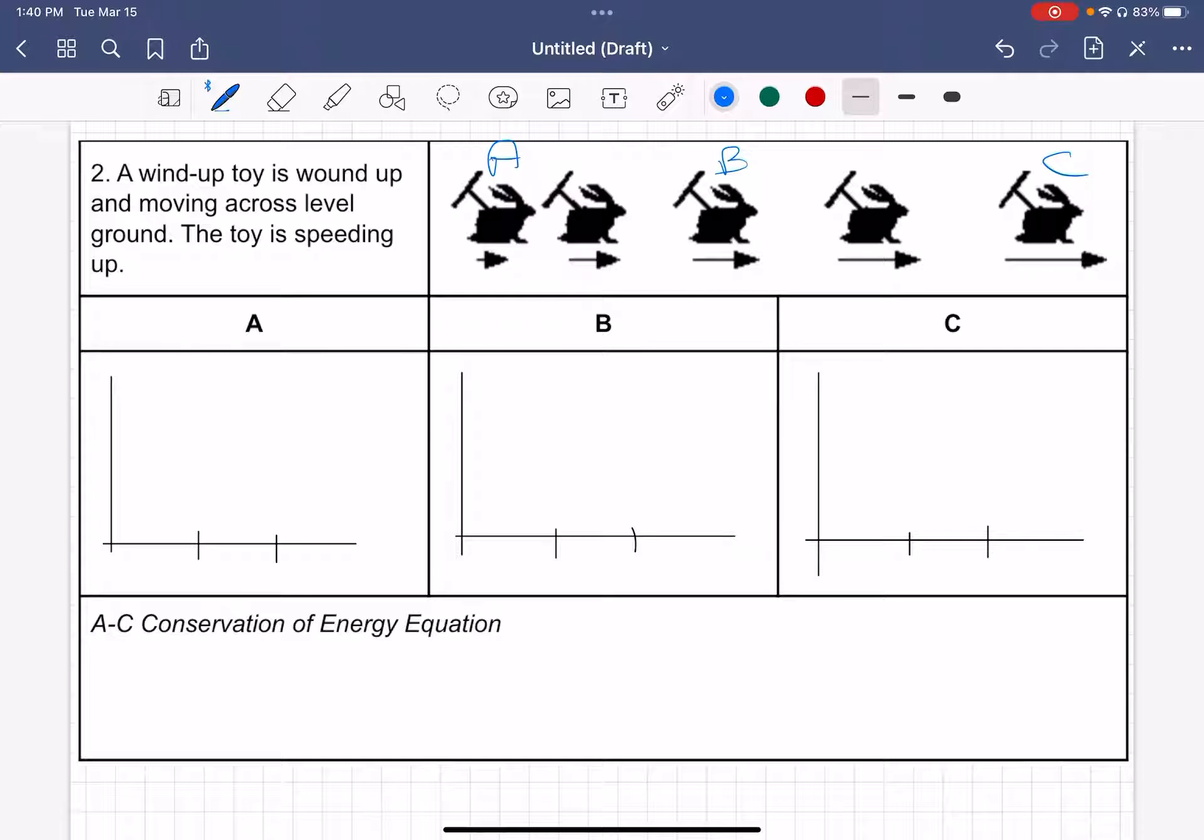I like to think about one snapshot at a time. So at A, this toy is not moving very fast. It's going to have some kinetic energy because it's moving, but it's not going to have a lot. So I just drew one block.